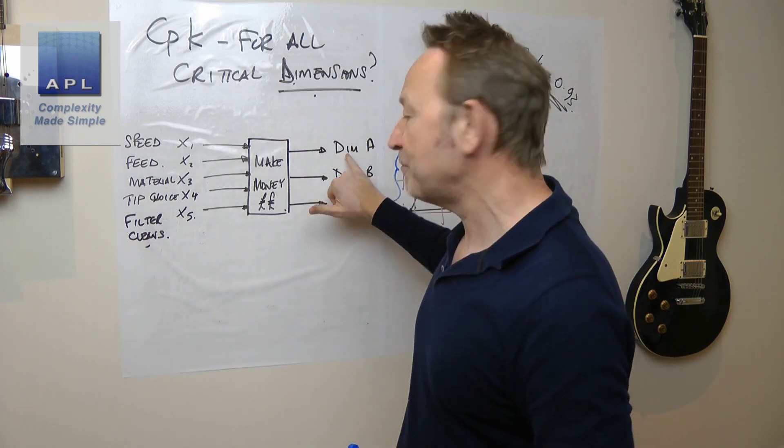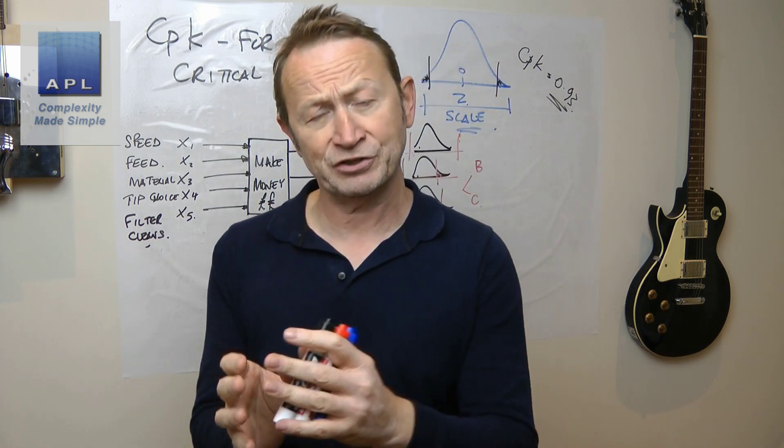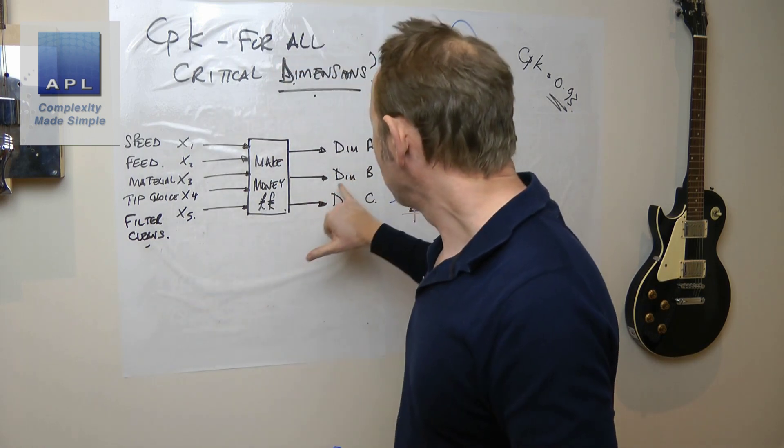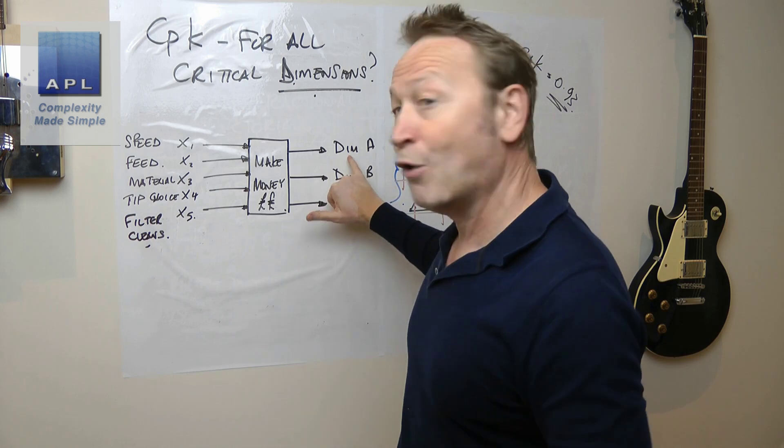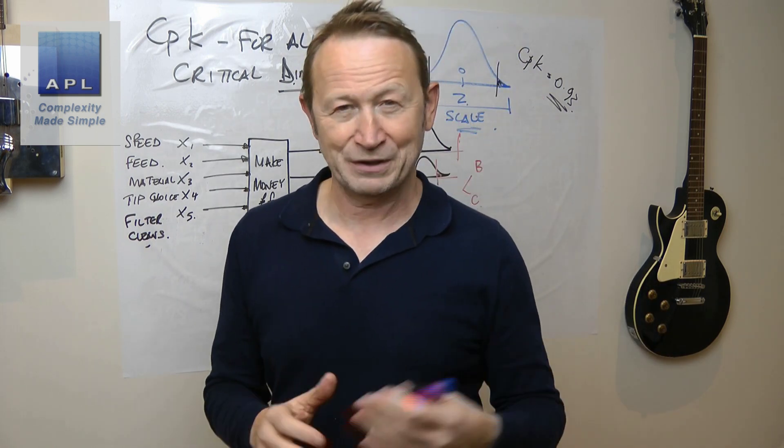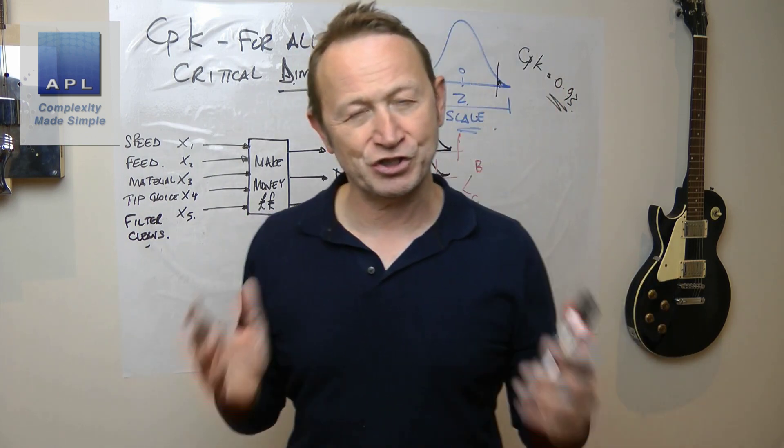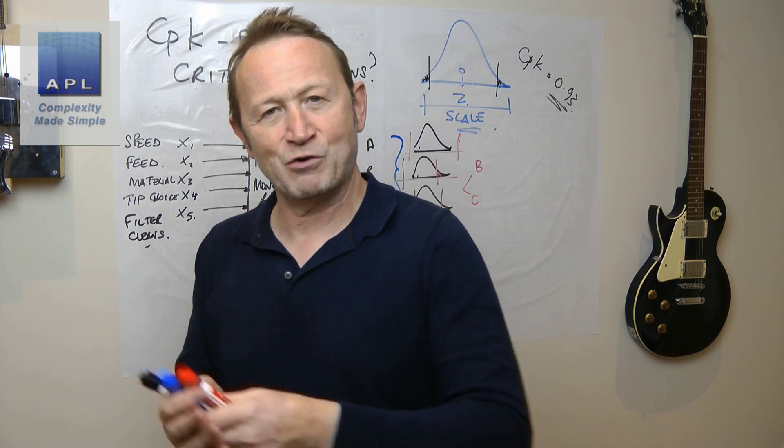If dimension A is a size, that's fantastic. But what if one is a bore, one is an outside diameter - completely different potentially. Maybe one is the surface finish, so now we're measuring in a completely different set of units.